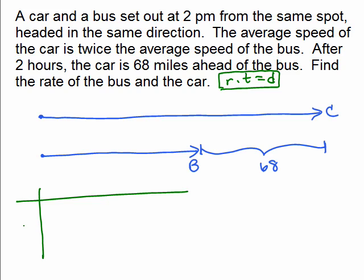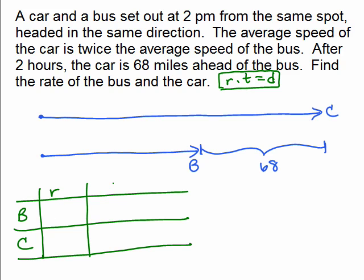So, now we want to get the information in a little chart here. So, we have a bus and a car and a rate and a time and a distance, rate times time equals distance. Okay, so the bus, what do we know about the bus? Well, for the rate, we know that the car is going twice as fast as the bus.